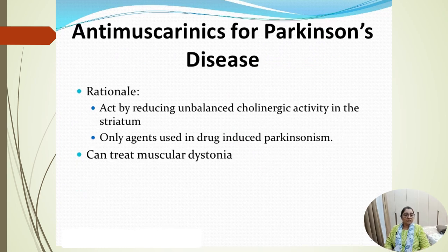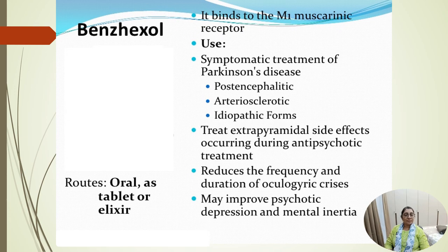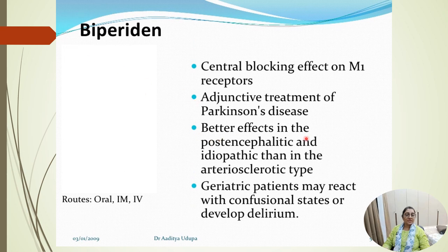Anti-muscarinic drugs for Parkinson's disease: in Parkinson's disease, there is an imbalance between dopamine and the cholinergic system. When acetylcholine activity is increased, blocking this parasympathetic activity with benzhexol (trihexyphenidyl) — a selective M1 muscarinic receptor antagonist — provides symptomatic treatment for post-encephalitic, arteriosclerotic, and idiopathic Parkinson's disease. It also treats extrapyramidal side effects from antipsychotic drugs, may improve psychotic depression and mental inertia, and may reduce oculogyric crises. Geriatric patients may develop confusional states or delirium.